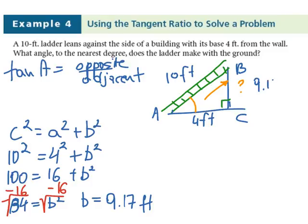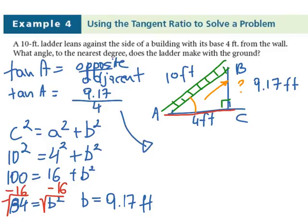So now we found that this side is actually 9.17 feet. Now we can use the tangent ratio to find our angle. So we know that tan of A, the opposite side is the side that we just solved for, 9.17 over the adjacent side, in this case it is 4. And to solve for A we have to take the inverse of tan, which is 9.17 over 4.